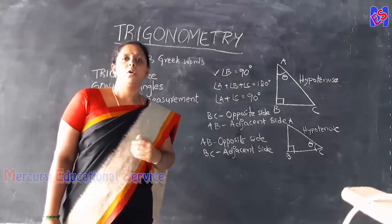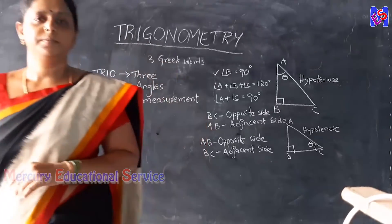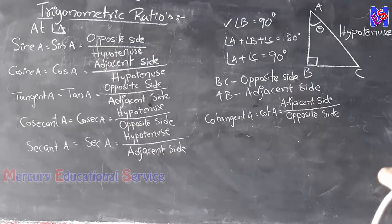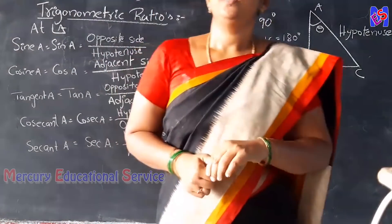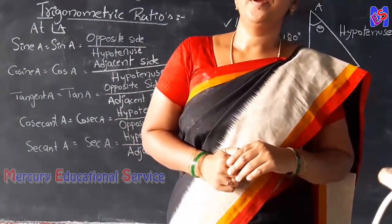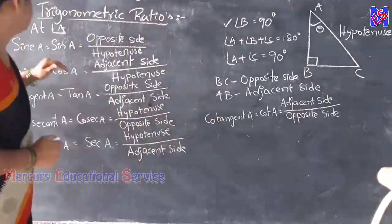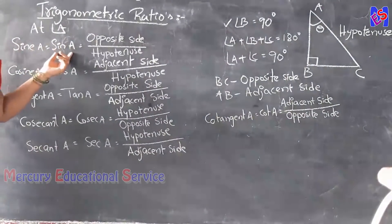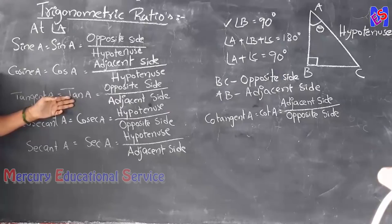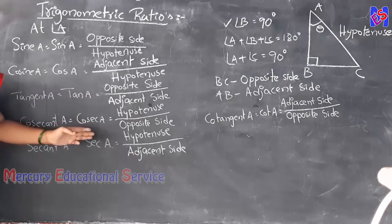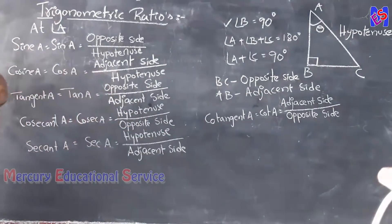Now we are going to discuss trigonometric ratios. There are six trigonometric ratios in trigonometry. These are: sine A, cos A, tangent A, cosecant A, secant A, and cotangent A.